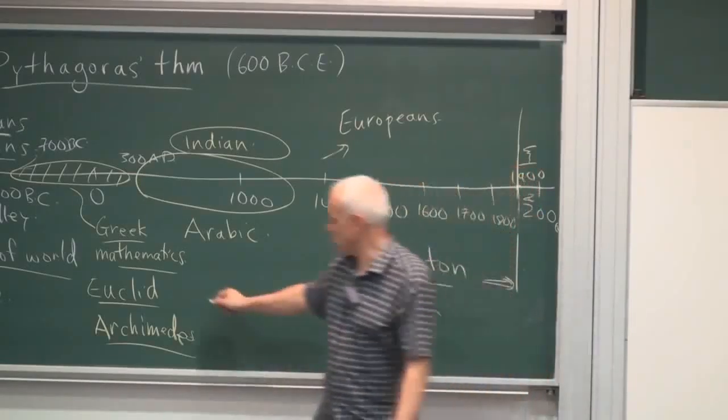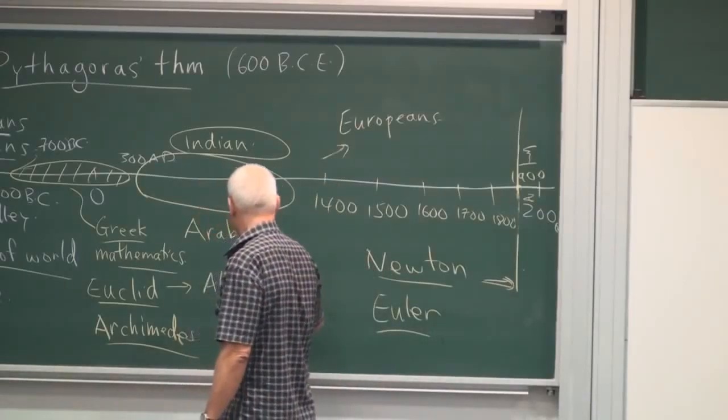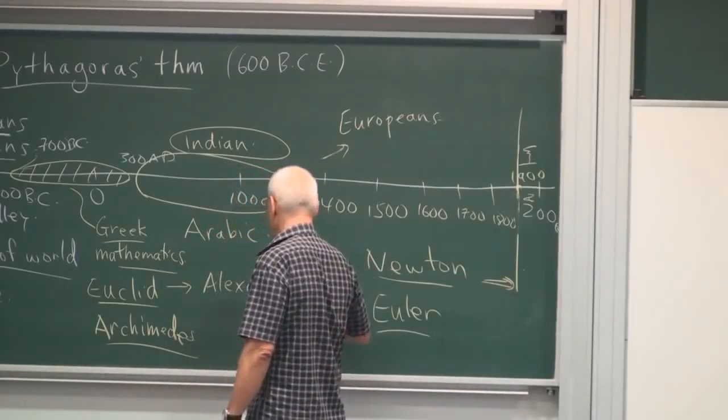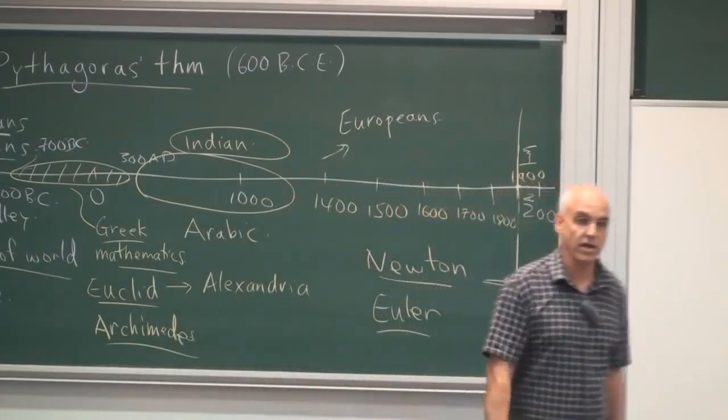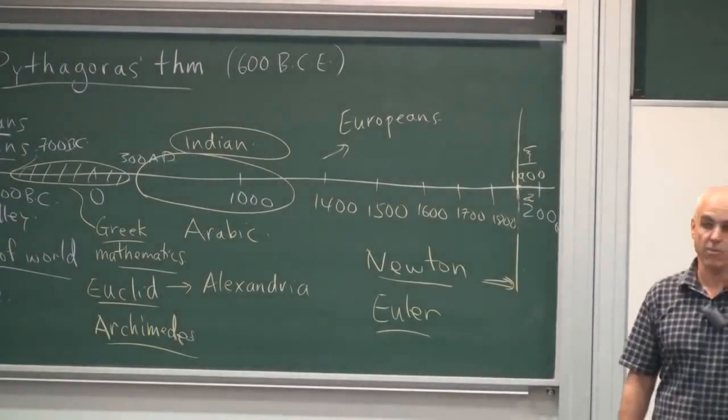And some of the main figures were not actually living in Greece at all. For example, Euclid was mostly in Alexandria, the center of learning in Egypt, which was very important for many hundreds of years. There was a big library there.